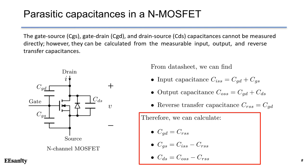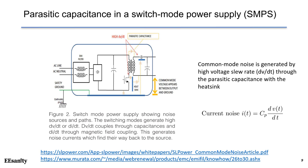Often, parasitic capacitance plays a critical role in switch mode power supply design. We have parasitic capacitance between windings, between the MOSFET drain and the heat sink, and between the diode and the heat sink. Since these heat sink parasitics experience a high dv/dt slew rate, common mode noise can be generated: the common mode current I equals Cp times dv/dt. This high dv/dt couples through the capacitance back to the source, creating common mode noise that must be carefully managed.